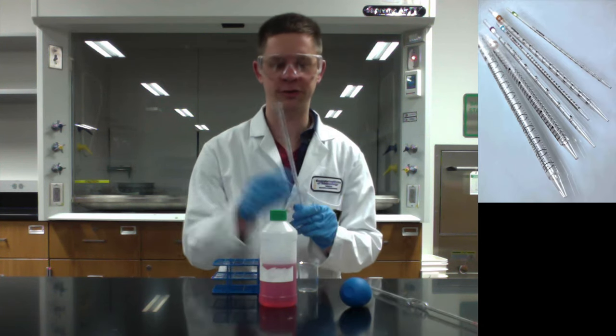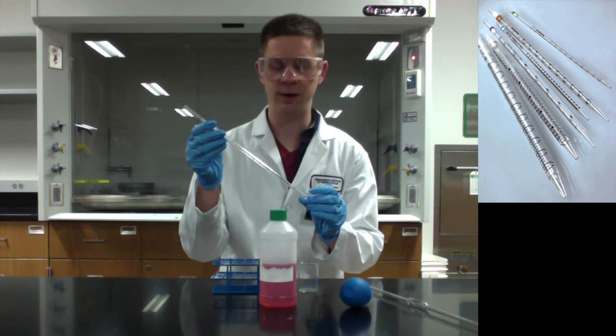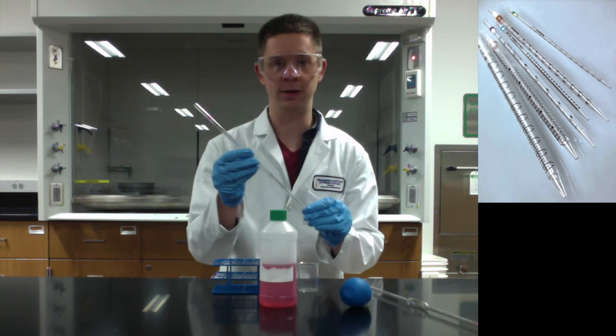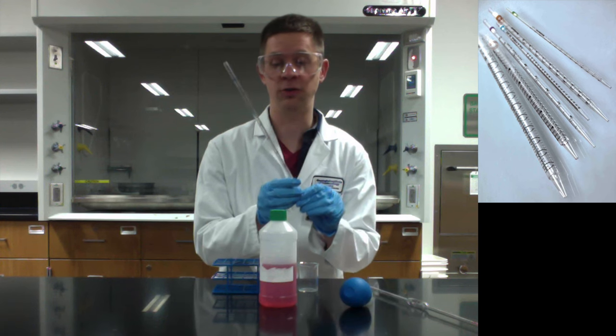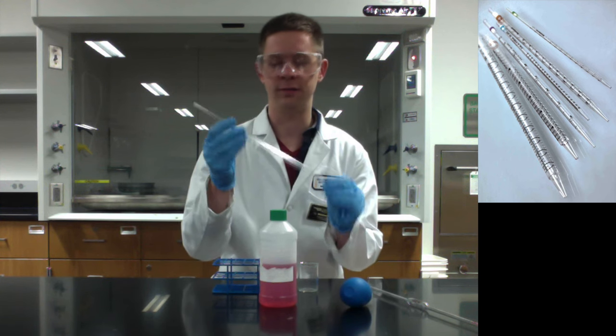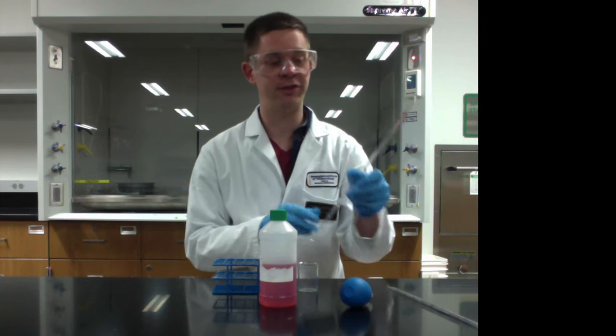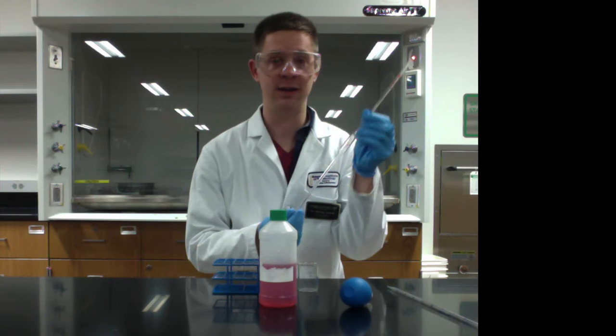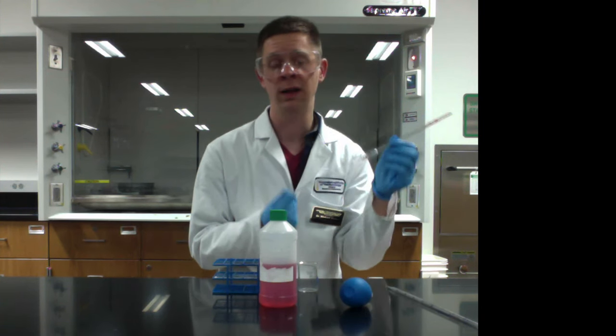The second type of pipet is called serological. It's got markings on it, kind of like a graduated cylinder, running from zero near the top or maybe near the middle down to the total maximum volume this is designed to deliver, which in this case is five milliliters. So when you want to deliver a precise volume that is generally a pretty round number, something like 10 milliliters, you'd use a volumetric pipet. And if you wanted to go up to 20 and still be really precise, you could use this twice.